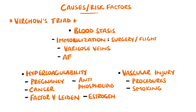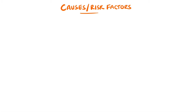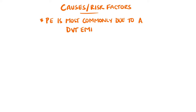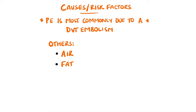Vascular injury can come from direct contact like procedures or trauma, but also chemical injury like smoking. Obesity also plays a role in each of these. The most common cause of a pulmonary embolism is a clot moving through the venous system from a deep vein thrombosis in the proximal veins of the leg, but other emboli could be air or fat, for example following breaking a large bone. It could also be a clot moving from the arterial circulation via a defect in the septum of the heart.